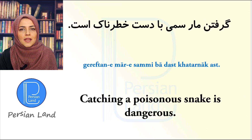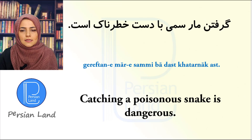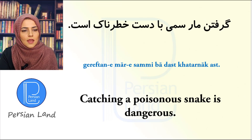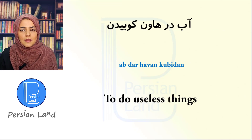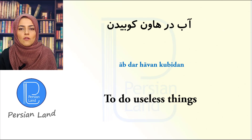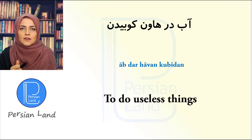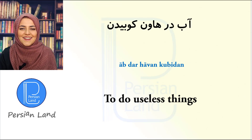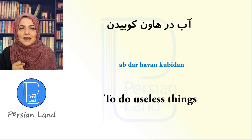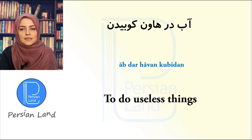گرفتن مار سمی با دست خطرناک است. گرفتن مار means 'to catch a snake'. مار سمی means 'a poisonous snake'. Now let's learn an idiom: آب در هاون کوبیدن. هاون is 'the mortar'. کوبیدن means 'to beat' and the idiom means 'to do useless things'.